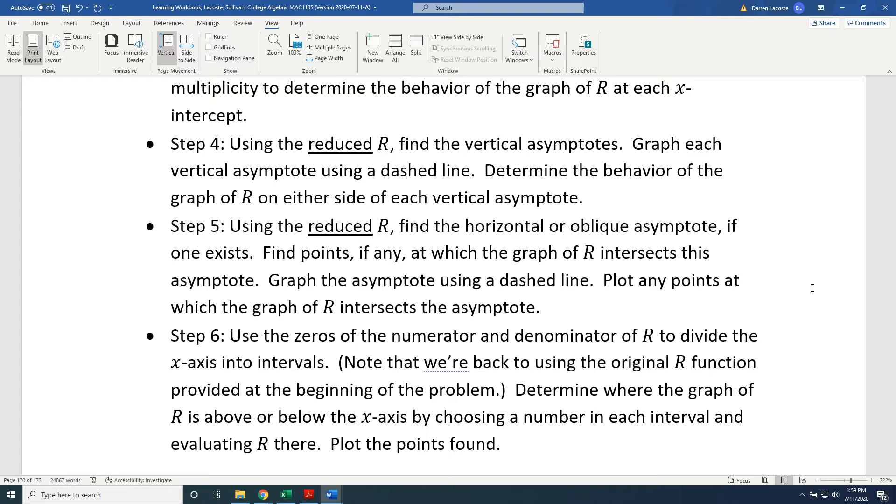Step 5: Using the reduced R, find the horizontal or oblique asymptote if one exists. Find points, if any, at which the graph of R intersects this asymptote. Graph the asymptote using a dashed line. Plot any points at which the graph of R intersects the asymptote.